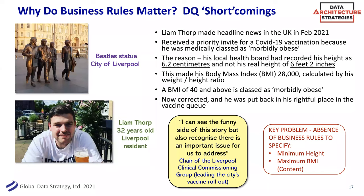The chair of the Liverpool Clinical Commissioning Group said she could see it was quite a funny story, but also recognized there were important issues to address. Whatever went wrong here, the business rules weren't right — you would have thought a business rule should specify what somebody's minimum height should be. Clearly, somebody who is 6.2 centimetres high is probably not right. There should also be some sort of maximum BMI that makes sense, and there was a format issue too — what sort of system design allowed recording somebody's height in centimetres rather than feet and inches?